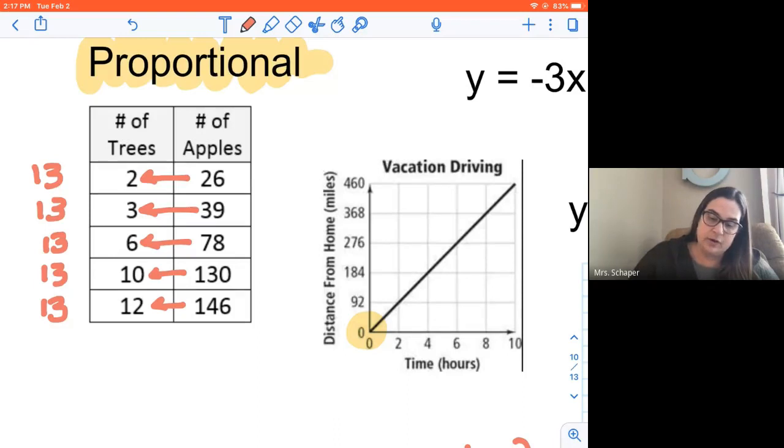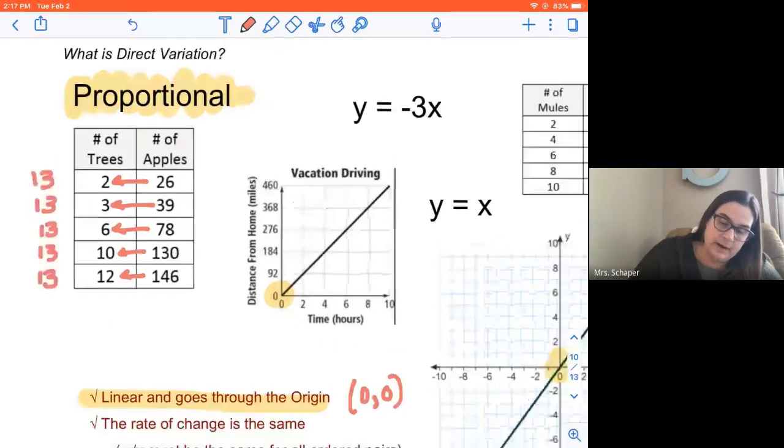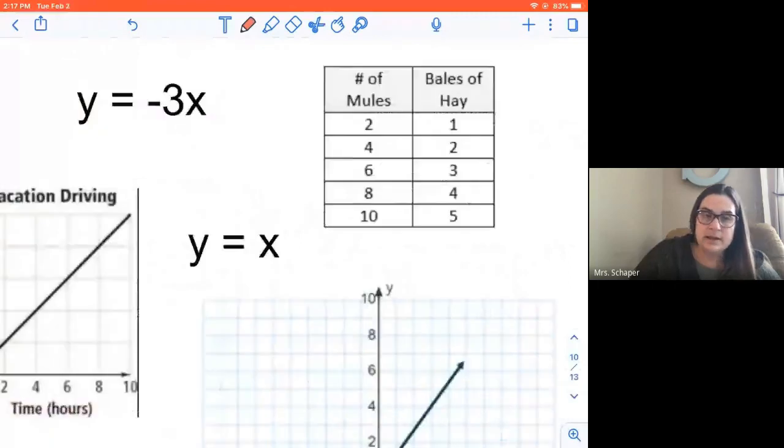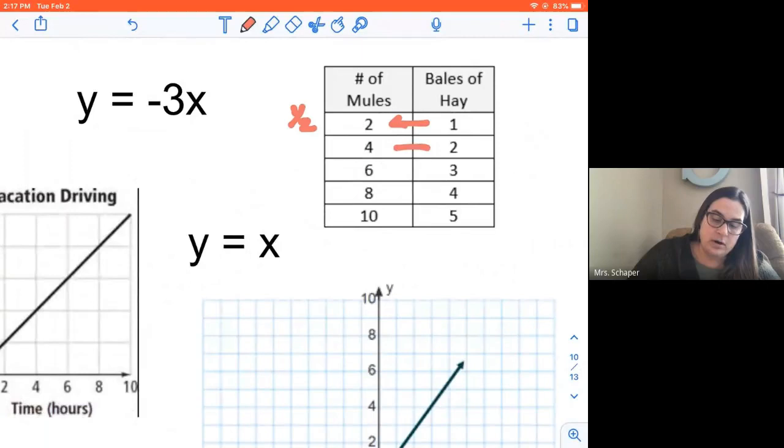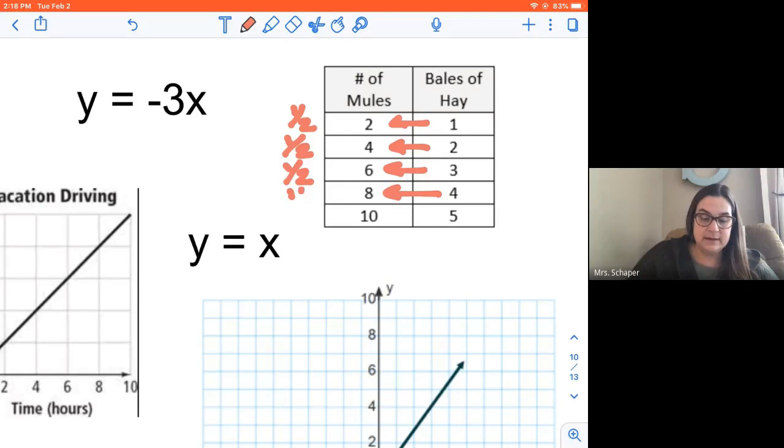We take a look over at this one. One divided by 2 is 1 half. 2 divided by 4 is 1 half. 3 divided by 6 is 1 half. 4 divided by 8 is 1 half. And 5 divided by 10 is 1 half. So because all of those are 1 half, that makes that t-table proportional.